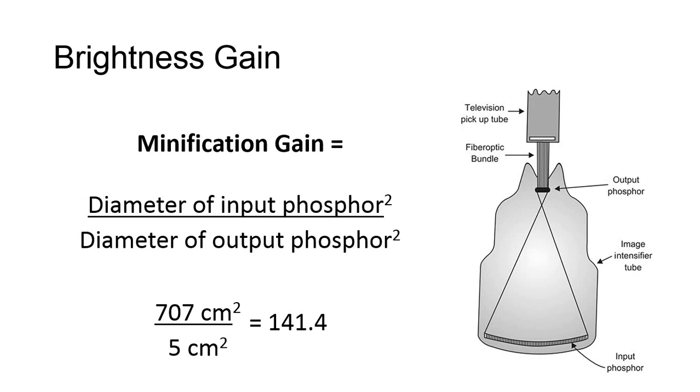Minification gain is the ratio between the input phosphor screen size, or the diameter, to the output phosphor screen size. The mathematical formula can be expressed as the diameter of the input phosphor squared divided by the diameter of the output phosphor squared.